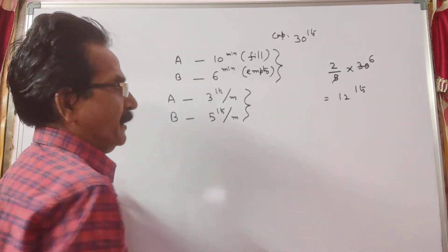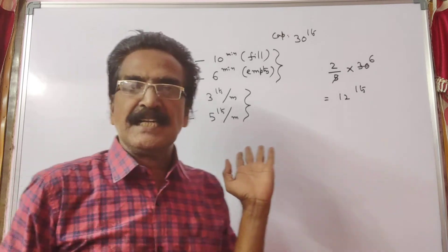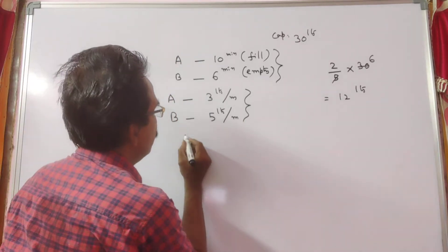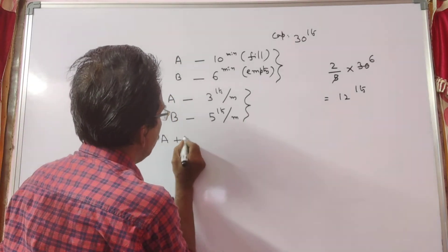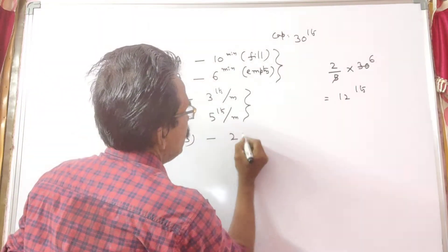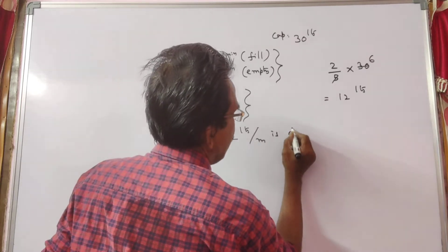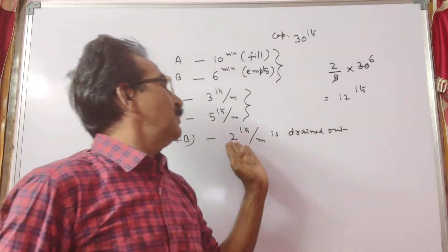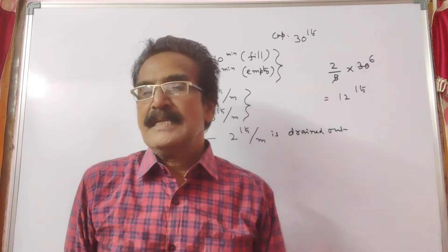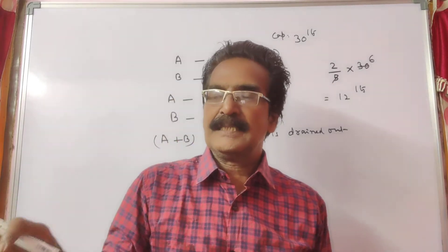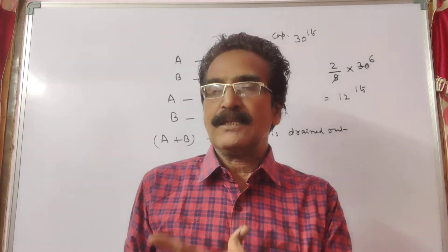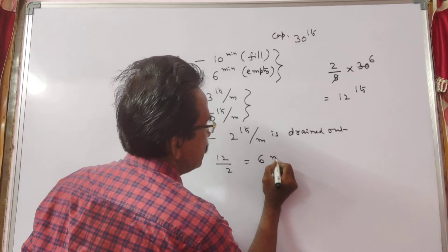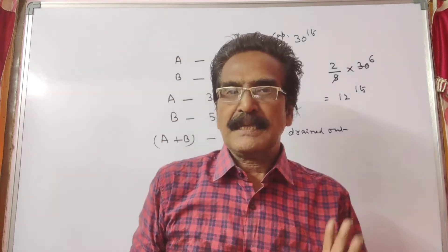If these two pipes are opened, the net result is plus 3 minus 5, so 2 liters per minute is drained out. For every one minute, 2 liters of water is drained. So 12 liters will be emptied in 12 divided by 2, which is 6 minutes. In 6 minutes, the tank is completely emptied.